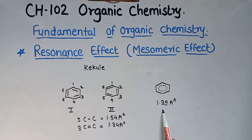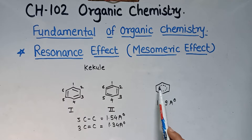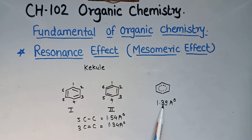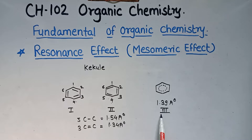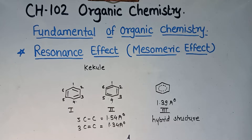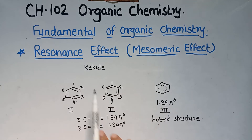This is the most accurate structure of benzene. In this structure, all the pi electrons are delocalized over the 6 carbon atoms, whereas in the two Kekulé structures, the pi electrons are localized. The delocalized structure is called the hybrid structure of benzene. This phenomenon is termed as resonance.